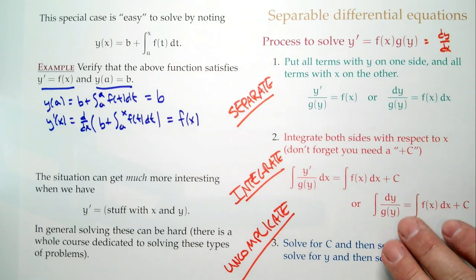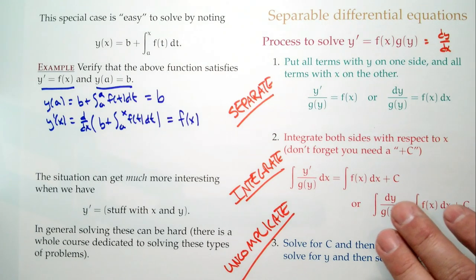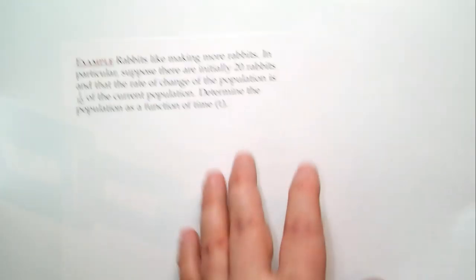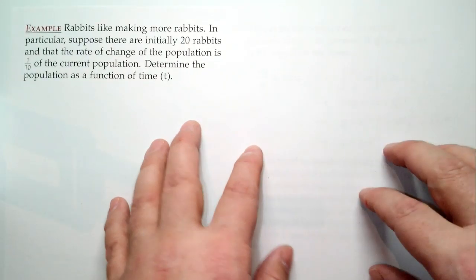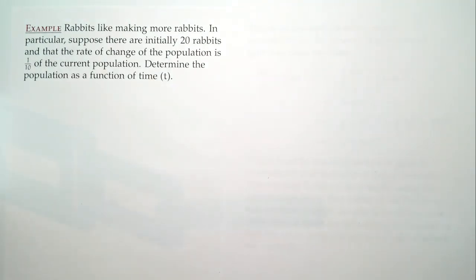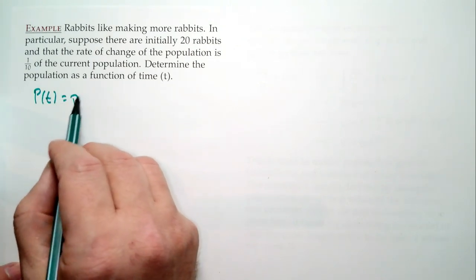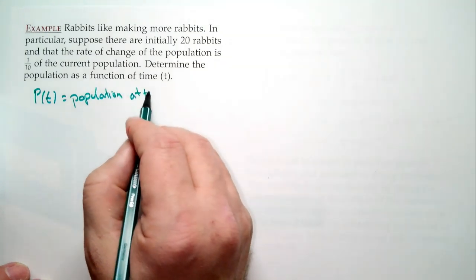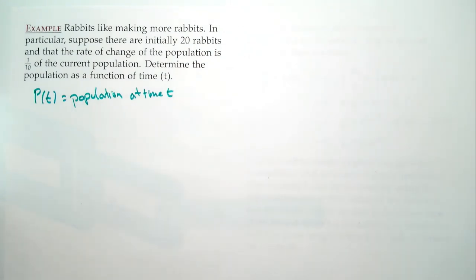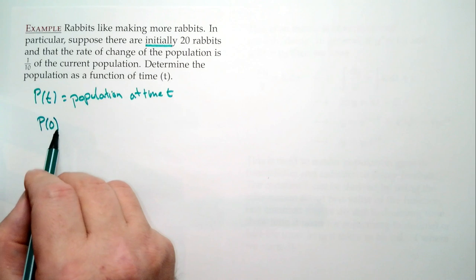Rabbits like to make more rabbits. Suppose there are initially 20 rabbits and the rate of change of the population is one-tenth of the current population. Determine the population as a function of time. Let p(t) be our population at time t. Initially means at time zero, so p(0) = 20.